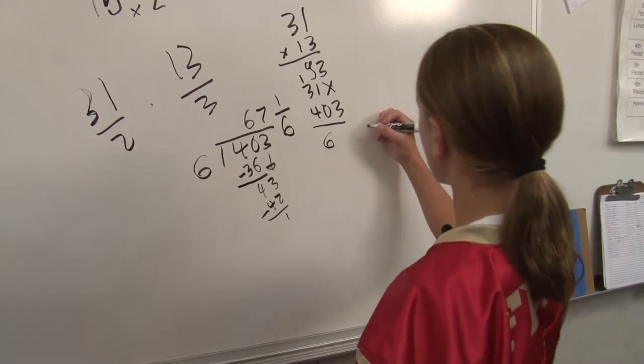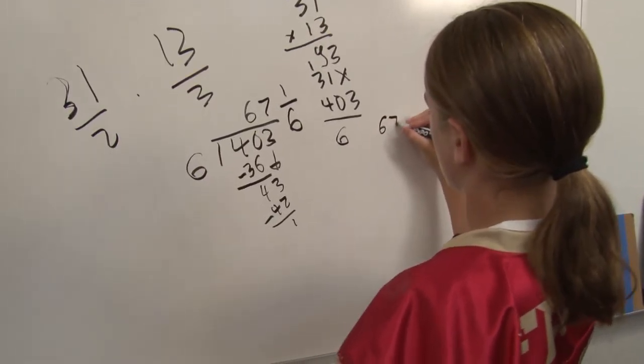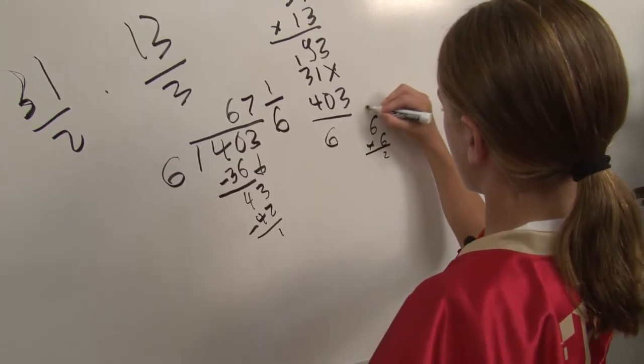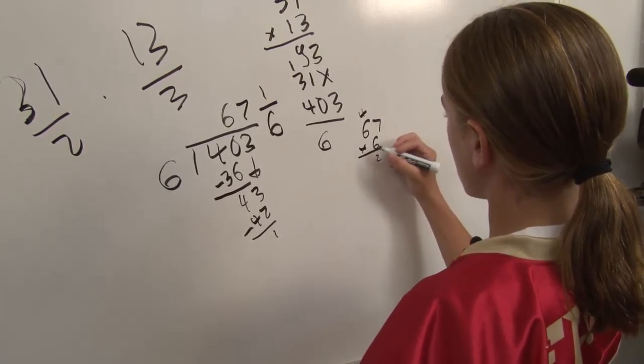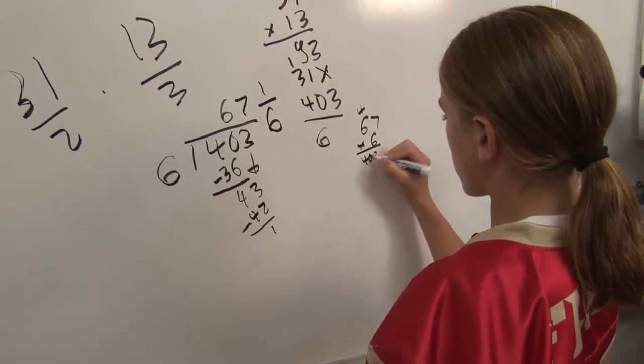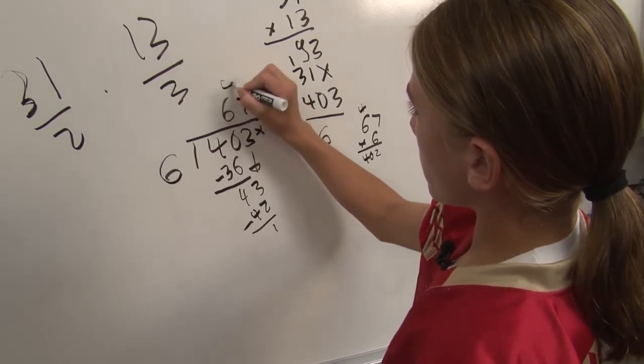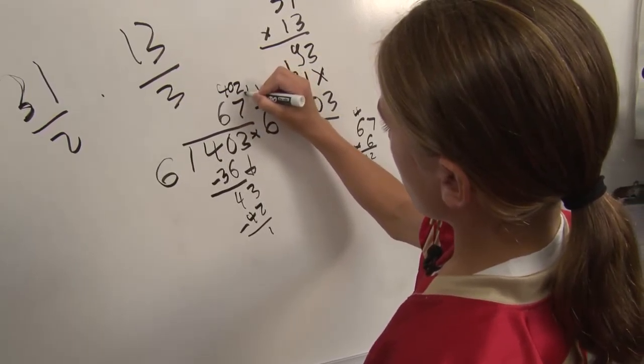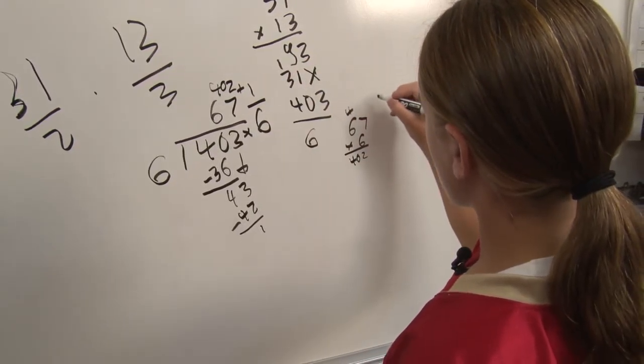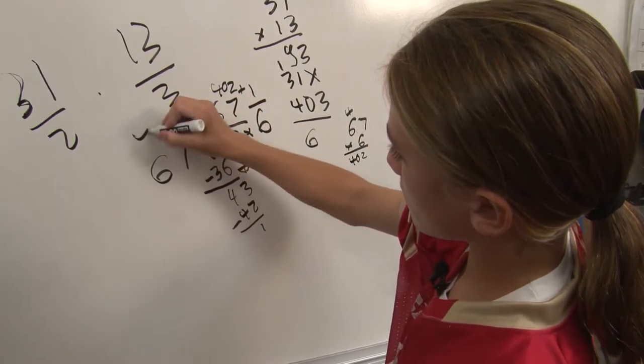So why don't you go ahead and do that? Okay, 67 times 6. 36 plus 4 equals 40, so 402. Then you add that 1, you get 403 over 6. Right there, right there. Which is exactly what we were looking for, right? Yes.